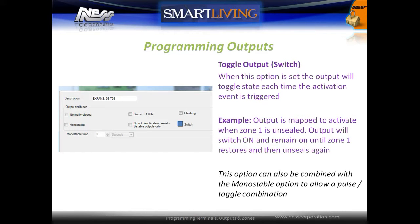The toggle option allows the output to switch state every time an activation event is triggered. For example, if the output is mapped to activate when zone 1 is unsealed, the output will switch on and remain on until zone 1 restores and then unseals again. This option can also be combined with the mono stable option to allow a pulsed toggle combination.